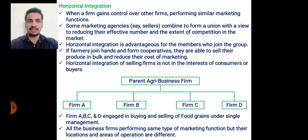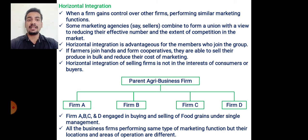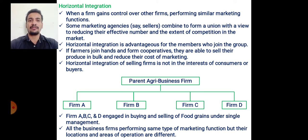Horizontal integration is advantageous for the members who join the group. If farmers join hands and form cooperatives, they are able to sell their products in bulk and reduce the per unit cost of marketing — this is also a type of horizontal integration. However, horizontal integration of selling firms is not in the interest of consumers or buyers; it will be totally beneficial to the sellers only, not to the consumers.